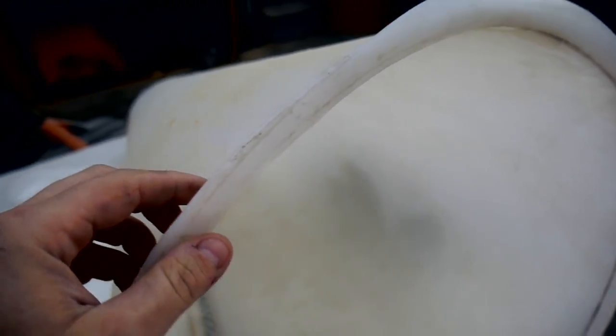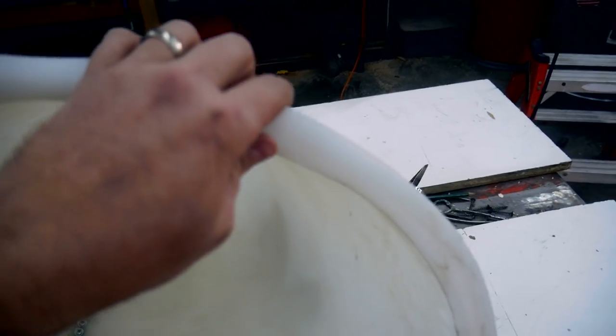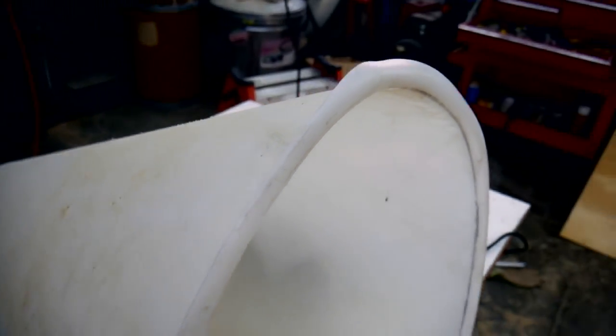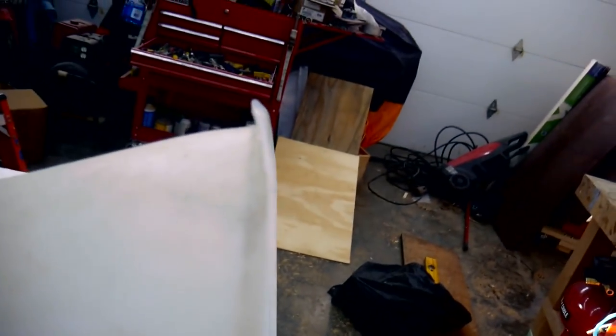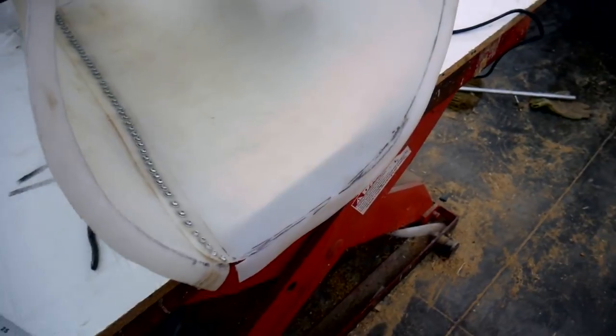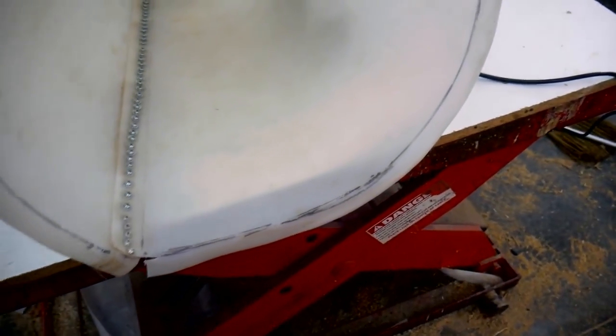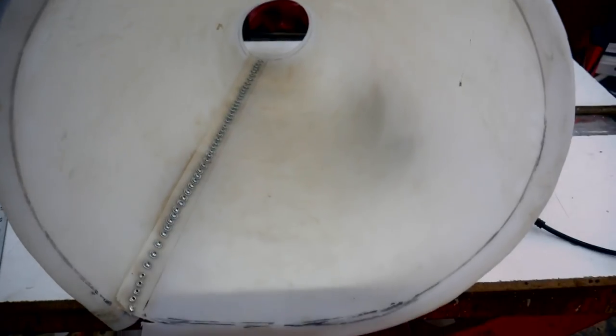So as you can see, I've started to roll a lip along the edge here. It's not perfect, but that's okay because this lip will become a flange that will be sandwiched between two pieces of wood, two rings of wood.